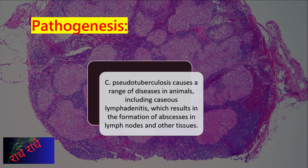Corynebacterium pseudotuberculosis is capable of resulting in abscesses in lymph nodes and other tissues of animals, thus giving rise to caseous lymphadenitis. Affected areas show signs of swelling, redness, and pain, and if left untreated can amount to considerable suffering and even mortality.